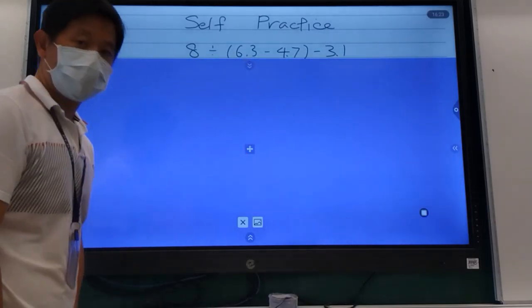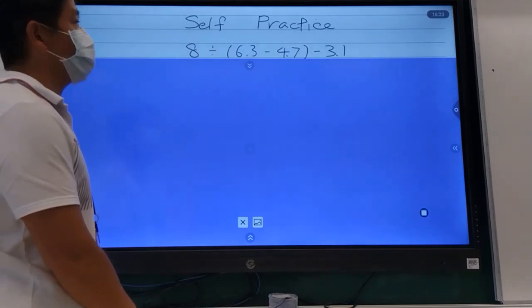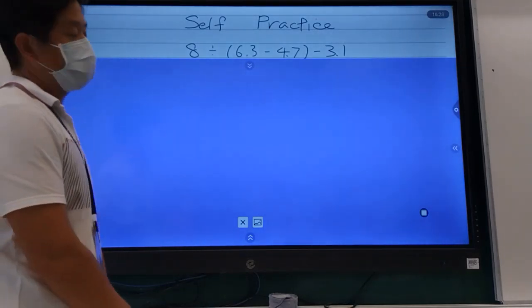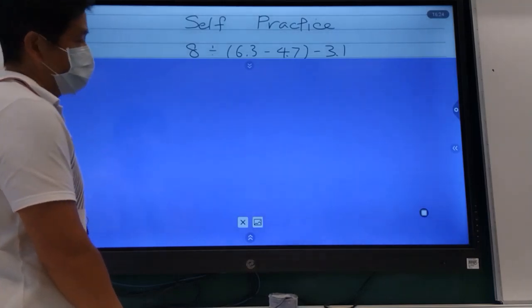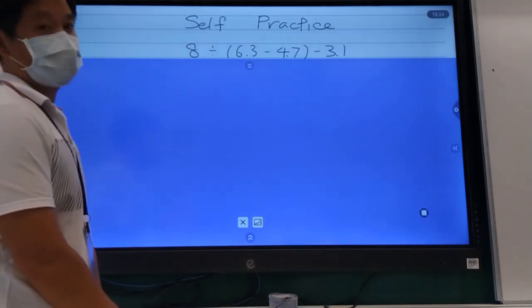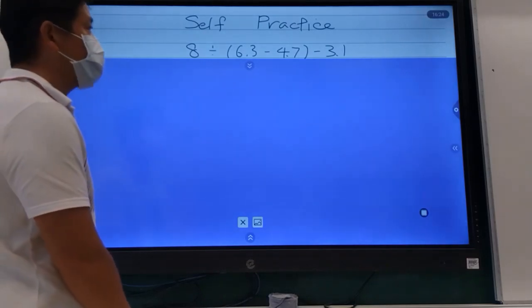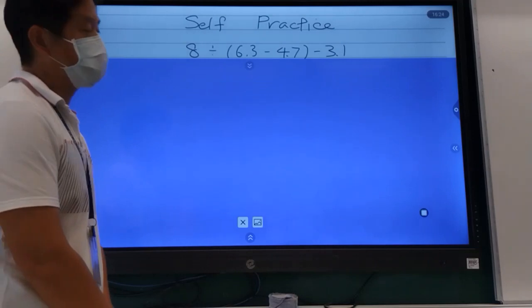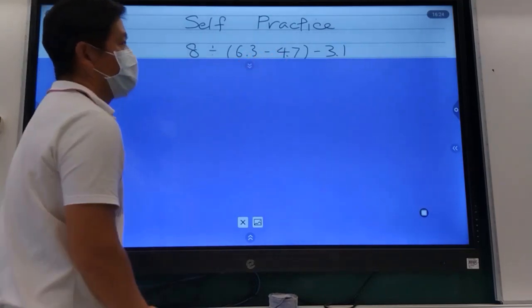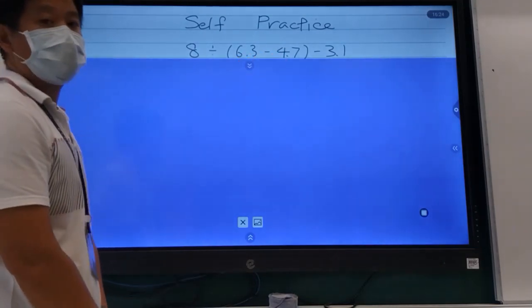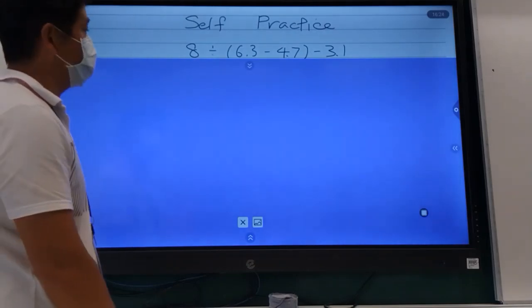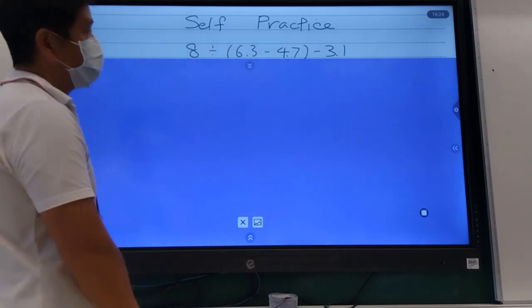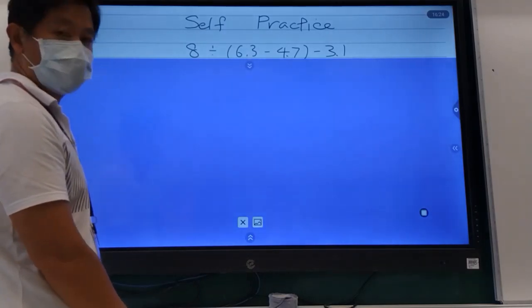The next practice question we have is 8 divided by bracket 6.3 minus 4.7 close bracket, minus 3.1. You could choose to do a fraction or keep it as decimal. To me, this problem seems to be better if you do it in decimal. Pause the video and try to do this on your own.